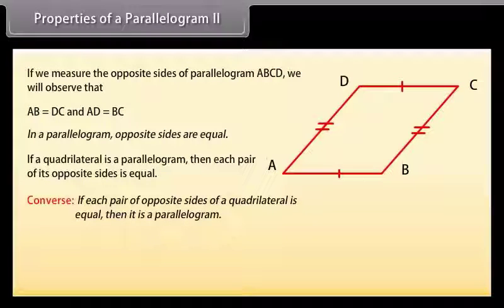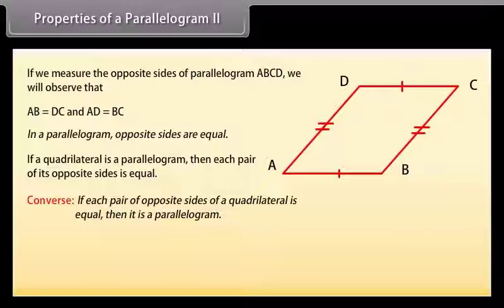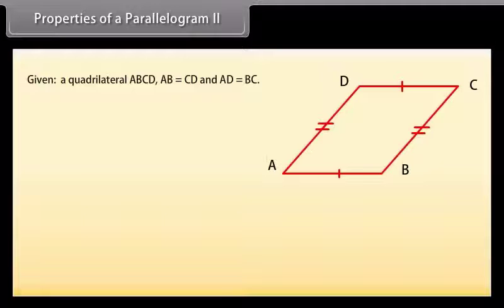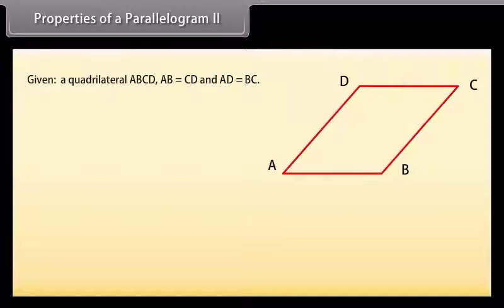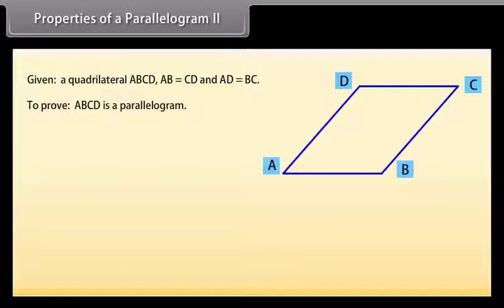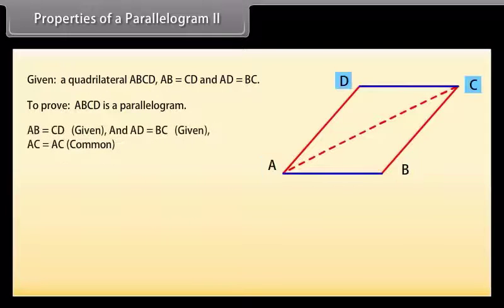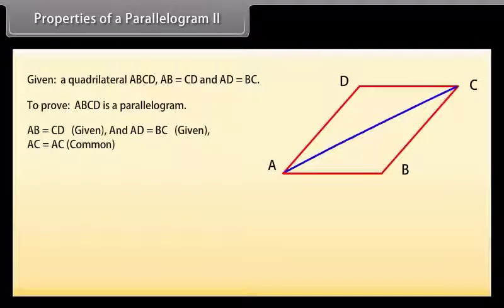The converse of this theorem says: if each pair of opposite sides of a quadrilateral is equal, then it is a parallelogram. Let us prove this. Given quadrilateral ABCD such that AB = CD and AD = BC. Since AC = AC (common), by SSS rule triangle ABC is congruent to triangle CDA.